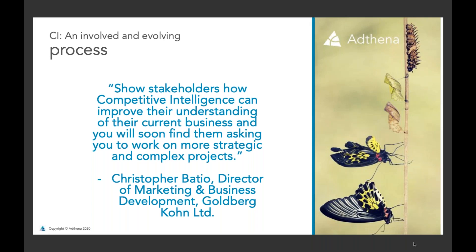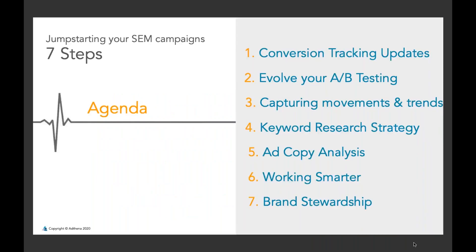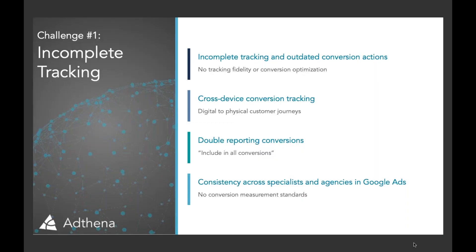Good competitive intelligence tells you more about your business than it will about your competitors. For the agenda today, we're going to discuss seven ways to jumpstart your paid campaigns after a flatline: conversion monitoring, how to rethink your A/B testing strategy, best practices for capturing movements and trends, keyword research strategy, ad copy analysis, how to work smarter, and the best ways to maintain brand control.